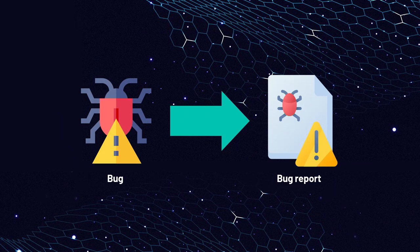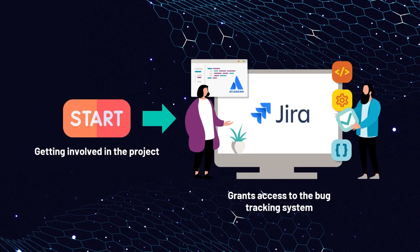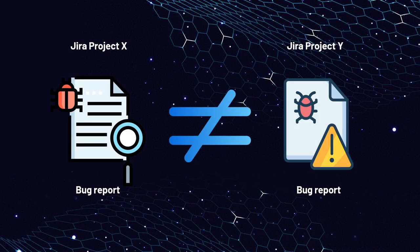Now let's consider how to document this issue in the bug report. There is a variety of bug tracking systems used by testers to manage bugs. One of the most popular is Jira — a widely used project management and issue tracking tool developed by Atlassian. It is designed to help teams plan, track and manage their work efficiently. Typically, when you start working on a project, you are granted access to the project's bug tracking system to review the working process, track tasks, issues, communicate with customers and manage your work. We will demonstrate this using a test project we created in Jira. Keep in mind that specific fields and their format might differ depending on the Jira project, as they are customizable.